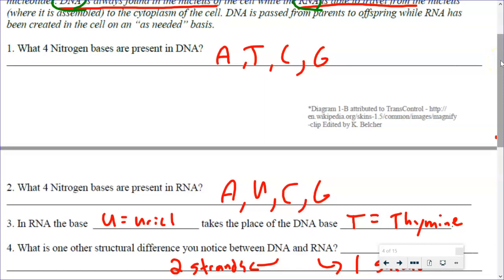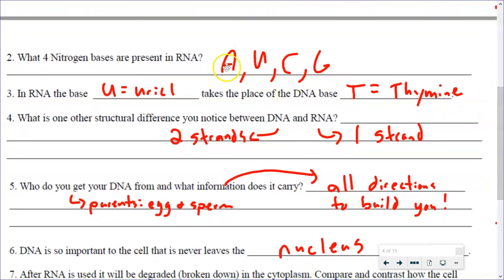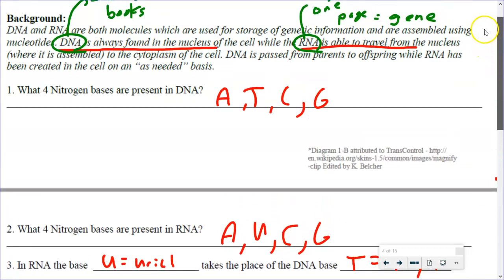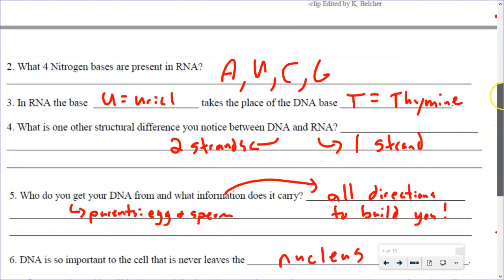RNA has something a little different. RNA has A, C, and G, but instead of T, it uses U. So in number three: in RNA, the base uracil takes the place of the DNA base thymine. So we do want you to know those bases really well — which ones are in DNA, which ones are in RNA, and that the U's and T's kind of switch out.